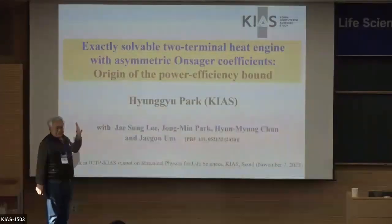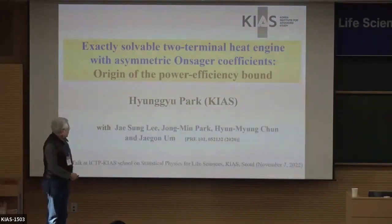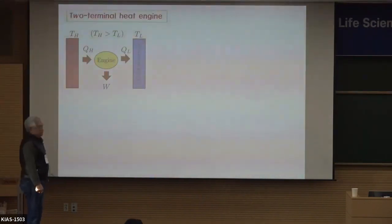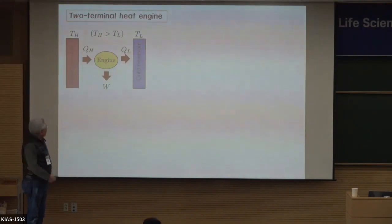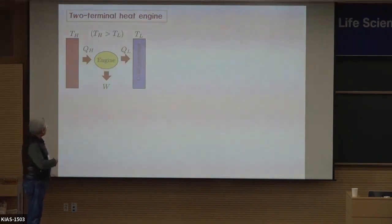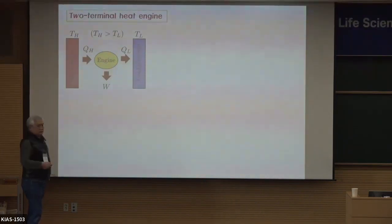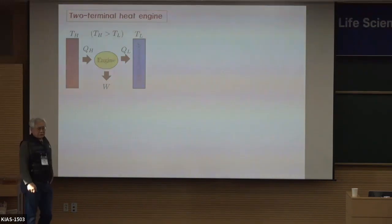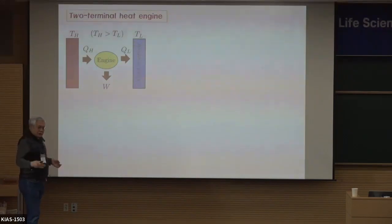I'm trying to answer this question in this talk. Starting from the very basic heat engine you can find in a freshman textbook: you have an engine and two reservoirs connected to it — a hot reservoir and a cold reservoir. The hot reservoir releases some energy in the form of heat to the engine. You can use part of this energy as useful work, and the remaining energy is dumped into the cold reservoir. That's the basic setup of any cyclic or steady-state heat engine.